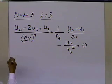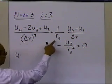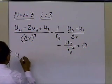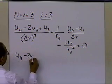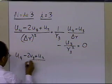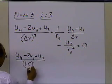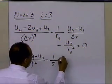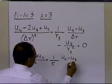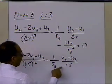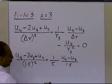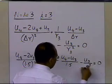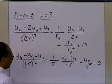Now let me substitute the known values: delta r is 1.5 and r_3 is the value of r at node 3, which is 5. So I get (u_4 minus 2·u_3 plus u_2) divided by 1.5 squared, plus (1/5)·(u_4 minus u_3) divided by 1.5, minus u_3 divided by 5 squared, equal to 0.